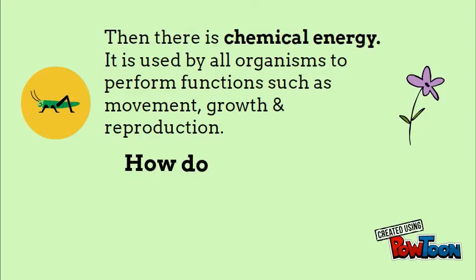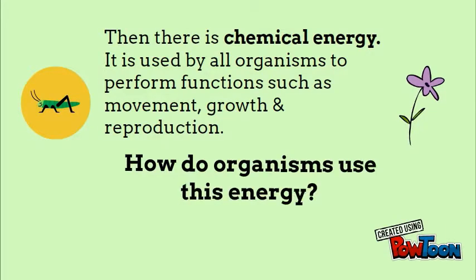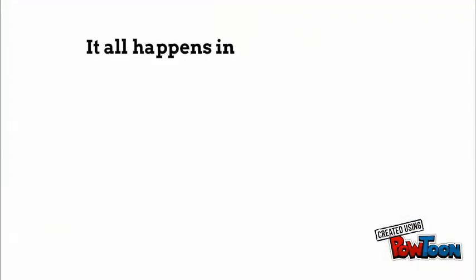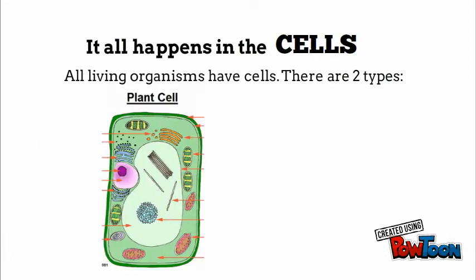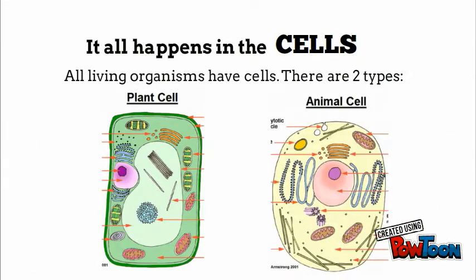We are going to look at how organisms use this energy. It all happens in the cells, and all living organisms have cells. There are two types: those that exist only in plants and those that exist only in animals. Notice the difference in their structures.